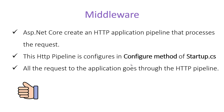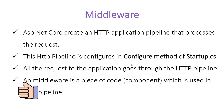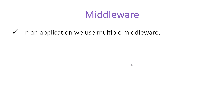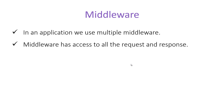All requests to the application go through the HTTP pipeline. A middleware is a piece of code — a software component — which is used in the HTTP pipeline. The HTTP pipeline is basically a combination of multiple middlewares, and in a .NET Core application we use multiple middlewares. Middleware has access to all the requests and responses. So before actually hitting the controller, we have a separate component where we have defined lots of middleware, and these middleware have access to all the requests and responses made to this particular application.